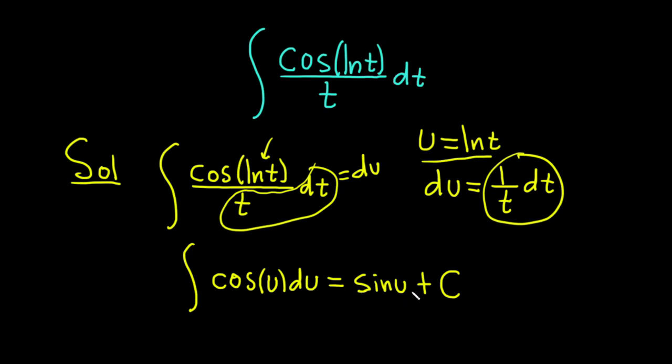And you should always check. If you differentiate this, you should get cosine, and that's true, because the derivative of sine is cosine. The derivative of C is 0.